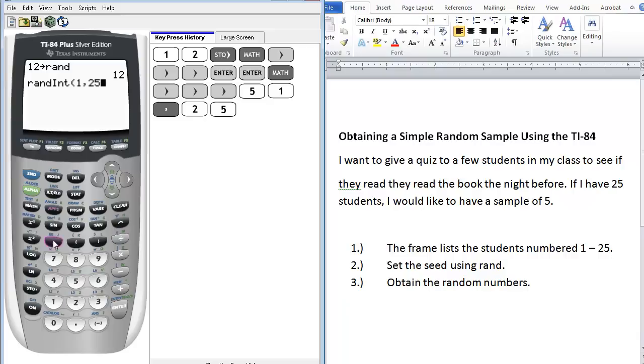The third number that we enter will tell how many I would like in my sample. I would like 5 different people in my sample. So close our parentheses and press enter.